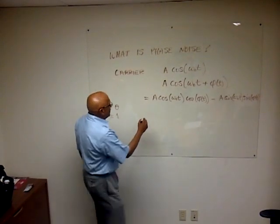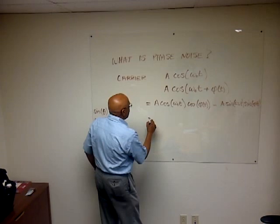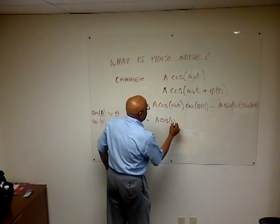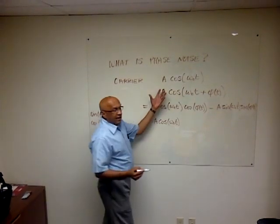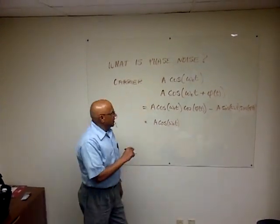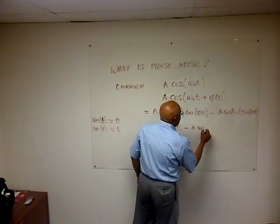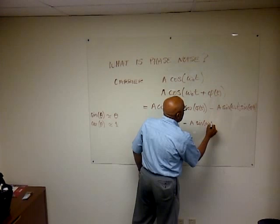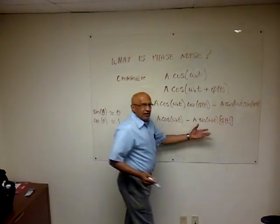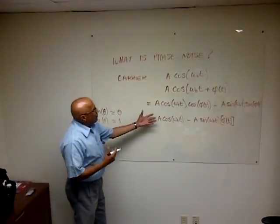So consequently, what we find is that if you have a carrier signal which has a little bit of phase noise, this looks like A cosine of omega naught T, which is the original carrier itself. I made cosine of phi of T approximately equal to 1, and you have a second term which looks like a modulated version of the same carrier. So now what do we have?